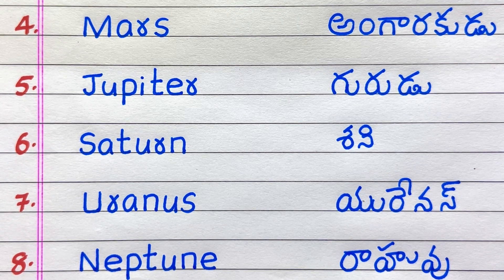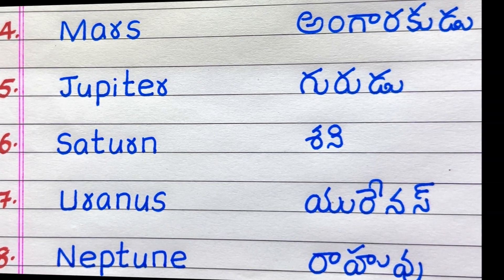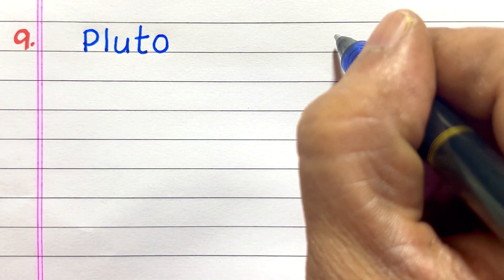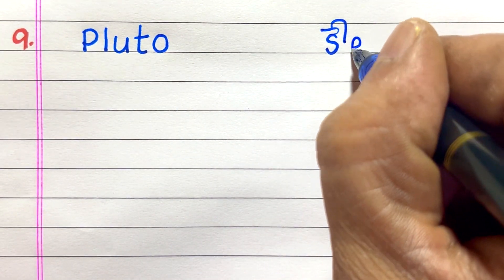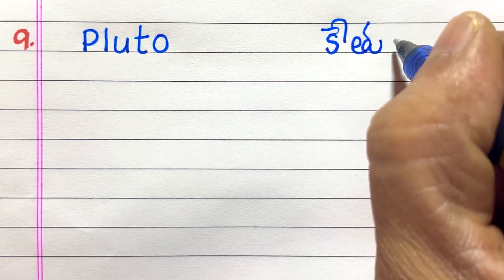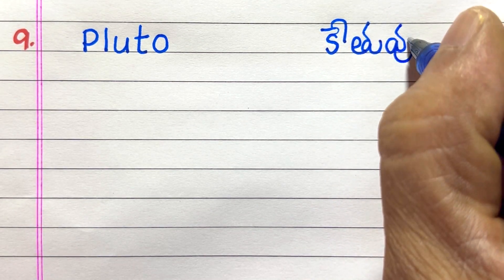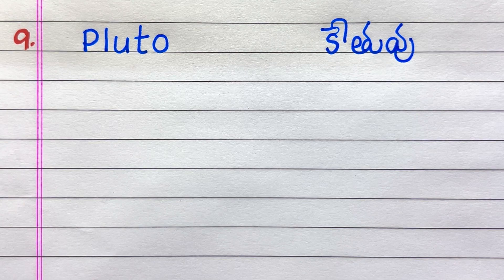8th and 9th, Neptune — called Rahu in Telugu.